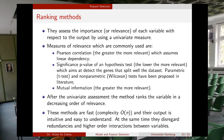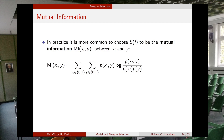These measures are applied to each single feature, and sometimes combinations of features can improve performance — but this cannot be detected here because higher-order interactions between variables are not considered. Mutual information is a very common measure of relevance.